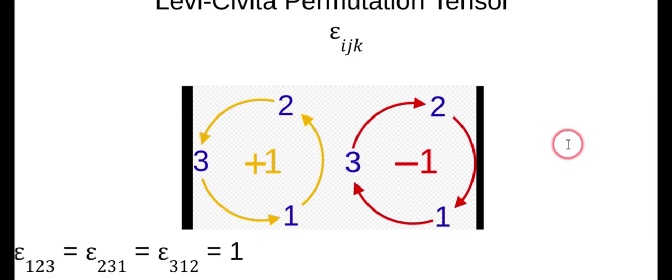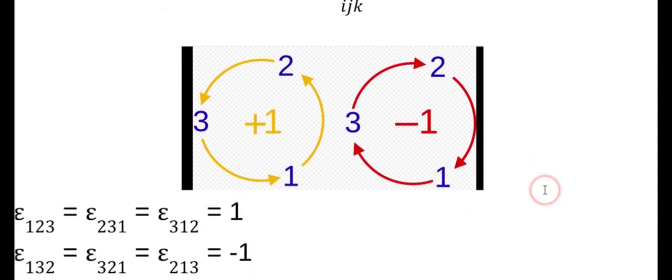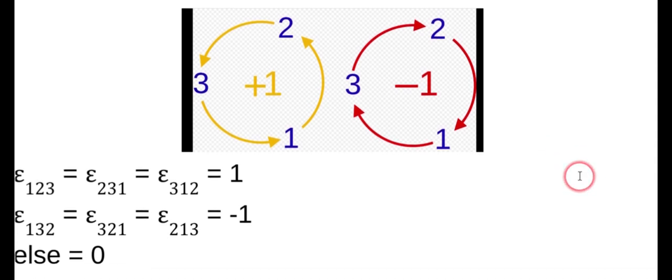So here's what it looks like. So 1, 2, 3, or 2, 3, 1, or 3, 1, 2 is 1. And 1, 3, 2, 3, 2, 1, 2, 1, 3 is negative 1. So you write your cross product as follows. You write your cross product like this.